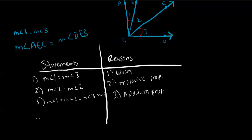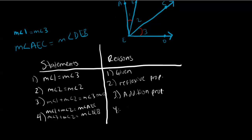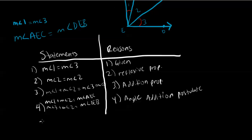Statement 4: measure of angle 1 plus measure of angle 2 equals measure of angle AEC, and measure of angle 3 plus measure of angle 2 equals measure of angle DEB. We can confirm this using the diagram — reason: angle addition postulate. Statement 5: measure of angle AEC equals measure of angle DEB, which is what we had to prove — reason: substitution.